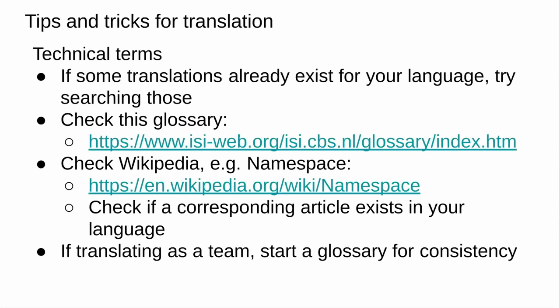Coming to technical terms — like 'mean' as a statistical concept or 'namespace' as a computing concept — these things you can often just leave untranslated if they're technical enough. But if you do want to translate them, there is a glossary of technical and statistical terms referenced by the R translation manual. A useful approach is to go to Wikipedia, find the page for 'namespace', go to the other languages section, and see if it's translated into your language. The data.table team also started a glossary — if you're translating as a group, you maintain a reference list of translations for technical terms that you agree on and refer back to.